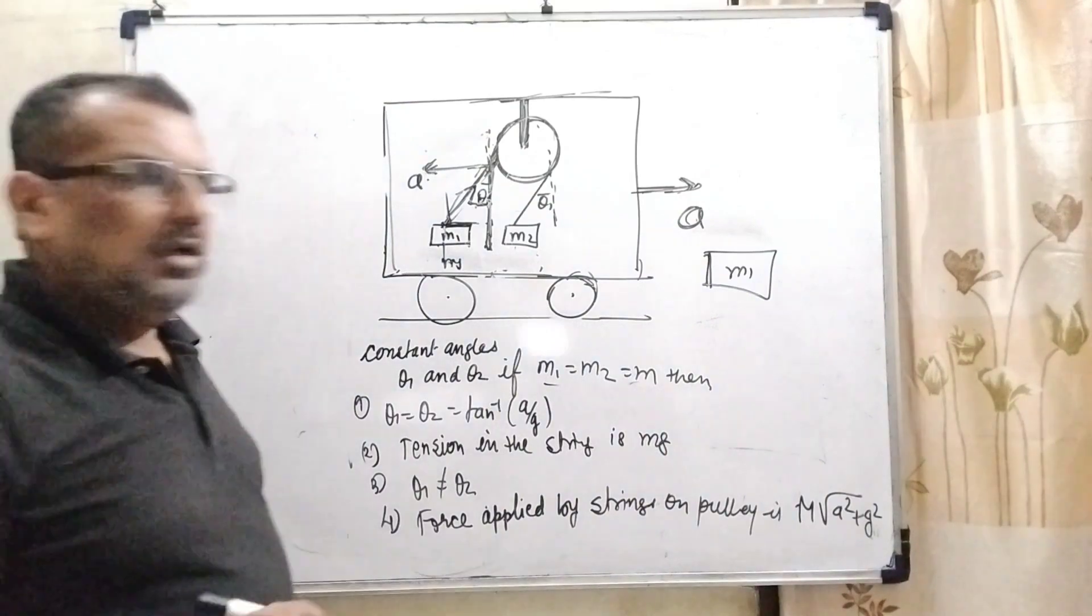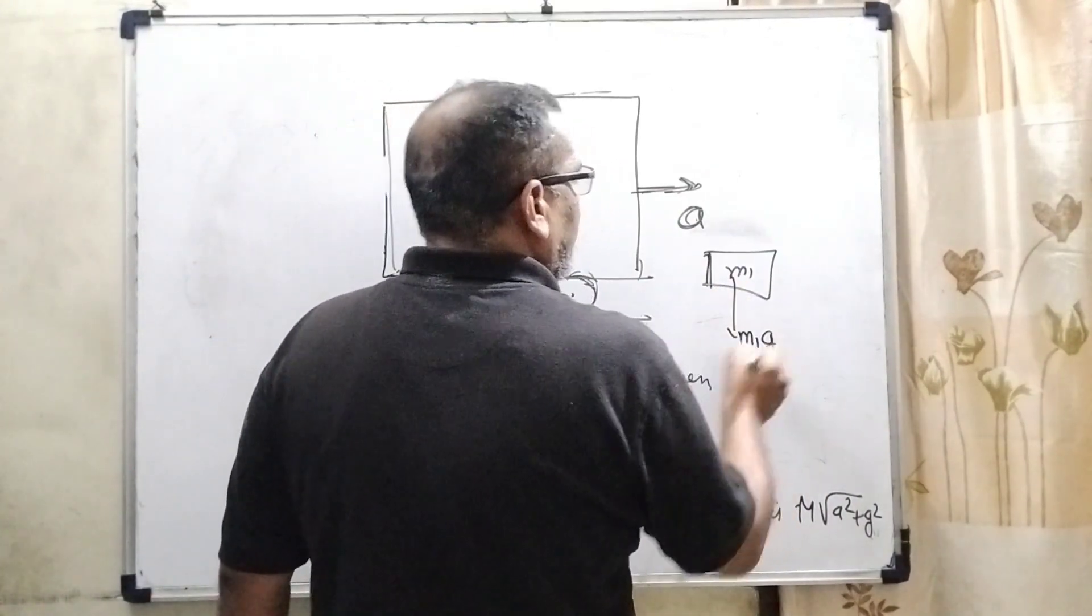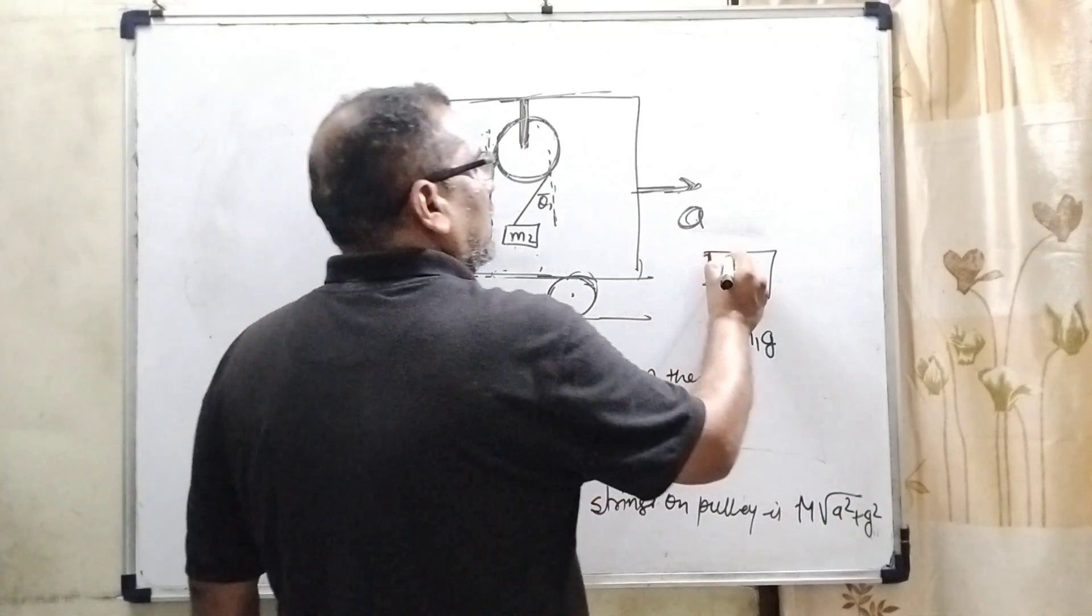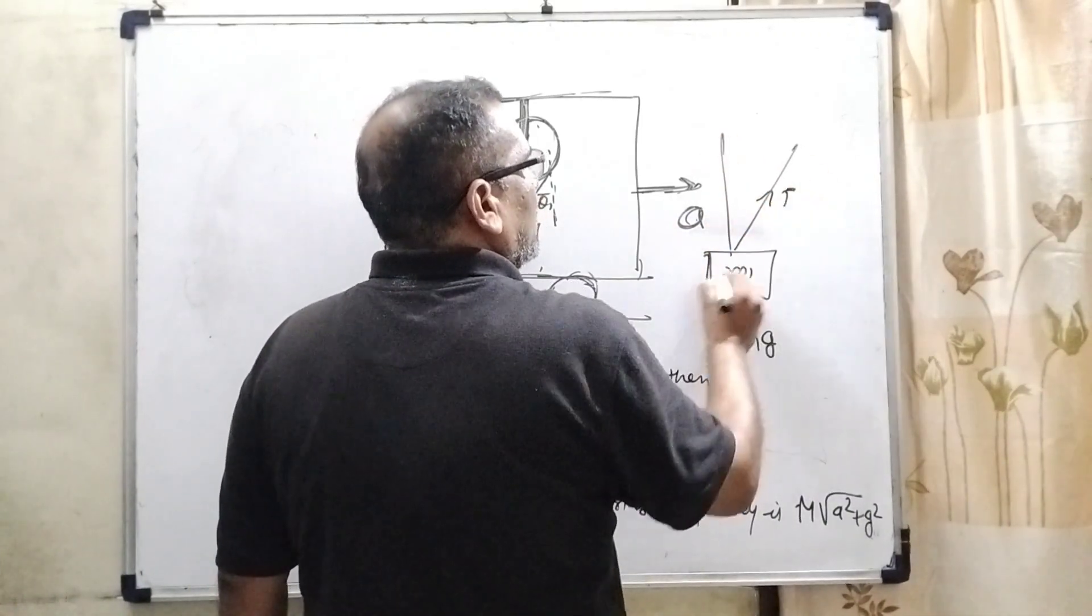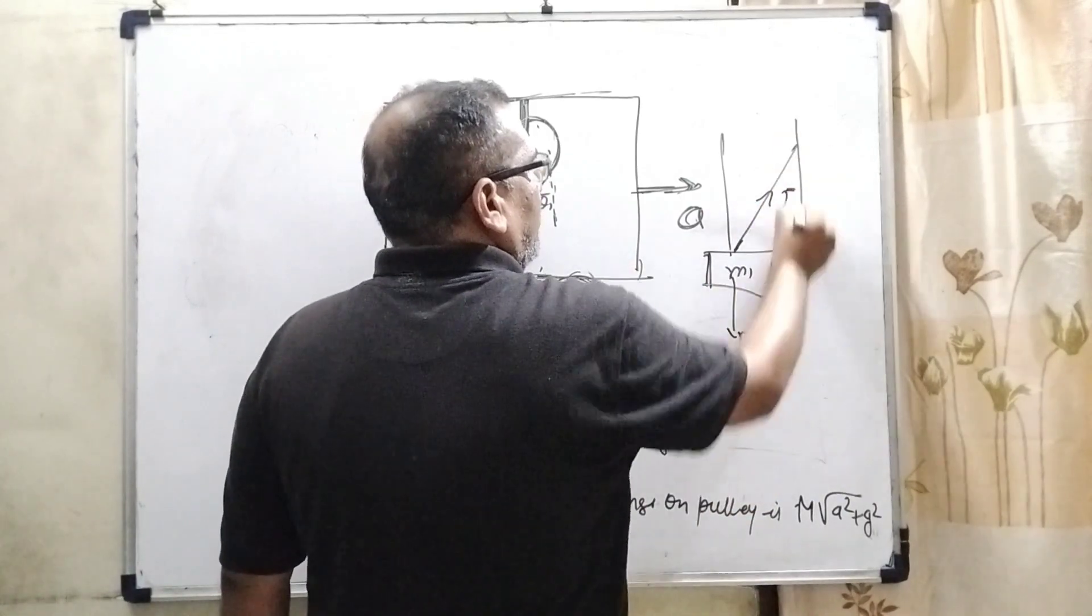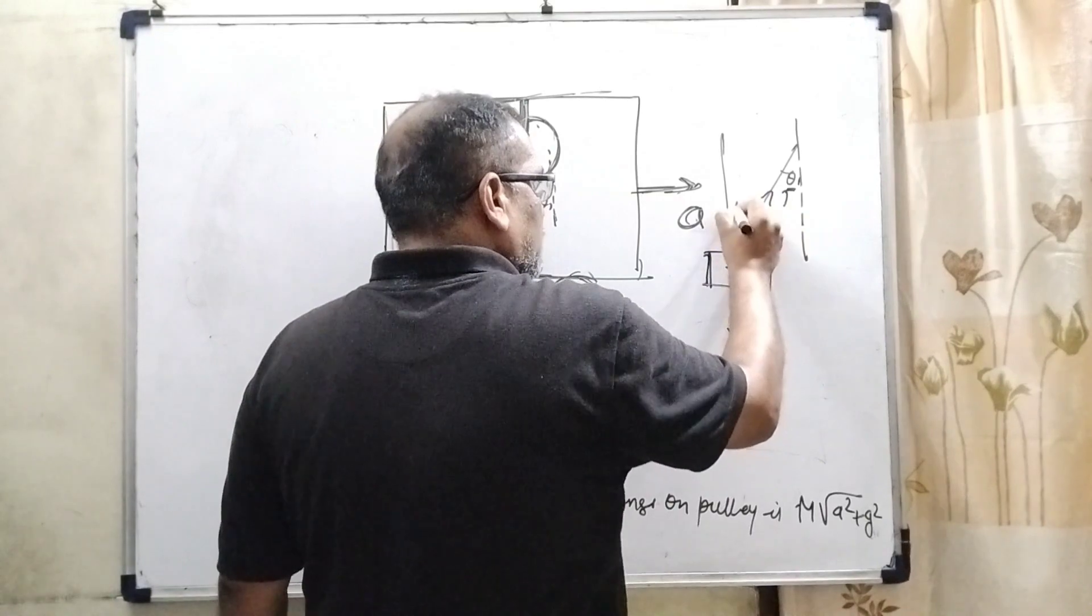Now here m1 g is acting in the downward direction. This is T, and because of this angle is perpendicular, it is theta1. Therefore it is also theta1.